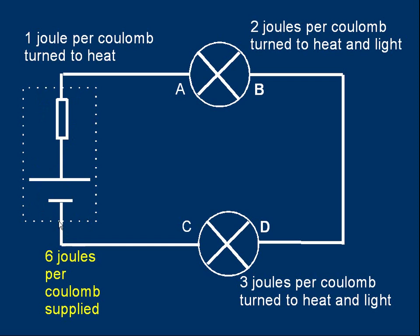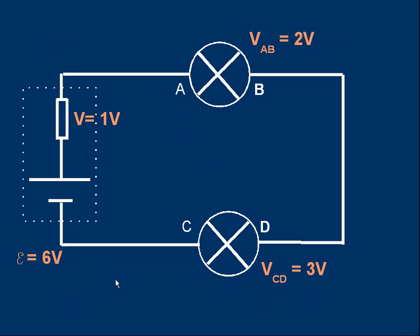Let's put some numbers in. Suppose the EMF of the cell is six joules per coulomb — that means for each coulomb going through the cell, six joules of energy are turned from chemical to electrical, which is the same as saying the EMF is six volts. The internal resistor produces one joule of heat per coulomb, so the voltage across it is one volt. The top bulb produces two joules of heat and light per coulomb, giving two volts across it, and the bottom bulb has three volts across it.